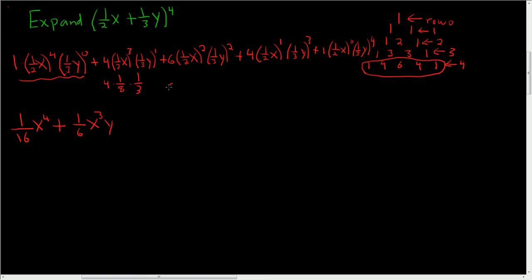Over here we have a 6, 1 4th, 1 9th. So that's 3 halves times 1 9th. 1 6th. So plus 1 6th. x squared y squared.